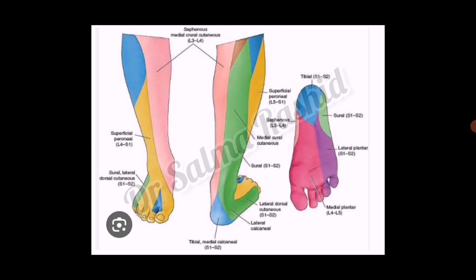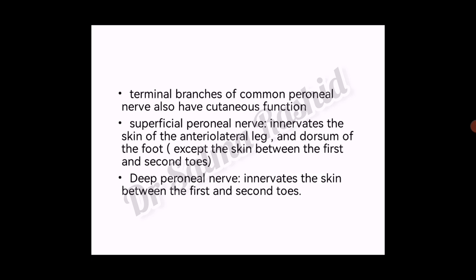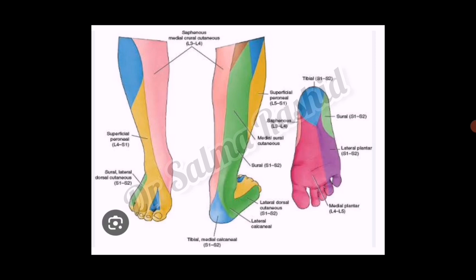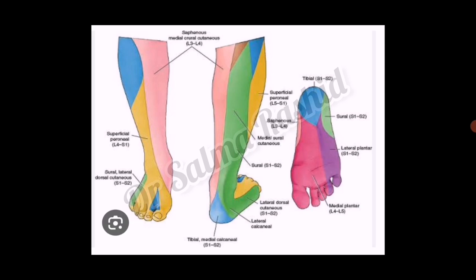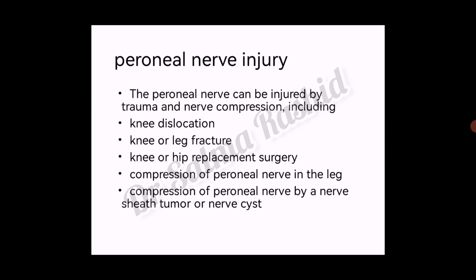The terminal branches of the common peroneal nerve also have cutaneous function. The superficial peroneal nerve innervates the skin of the anterior lateral leg and dorsum of the foot, except the skin between the first and second toes — shown in yellow in the diagram. The deep peroneal nerve innervates the skin between the first and second toes, shown in blue on the dorsal aspect of the foot. On the posterior compartment, the common peroneal nerve has no direct cutaneous innervation, and neither does the plantar of the foot.